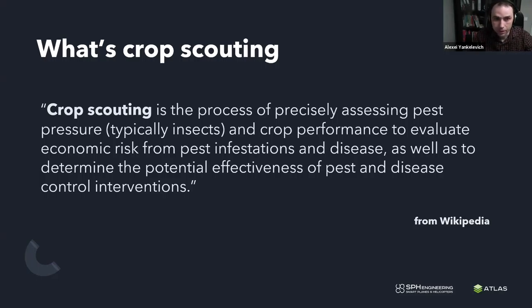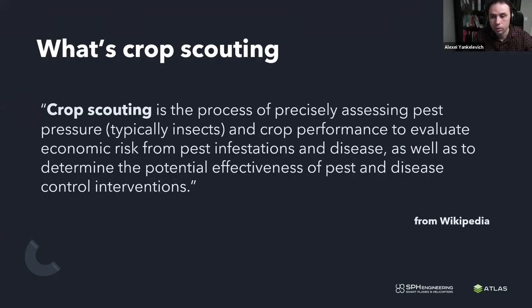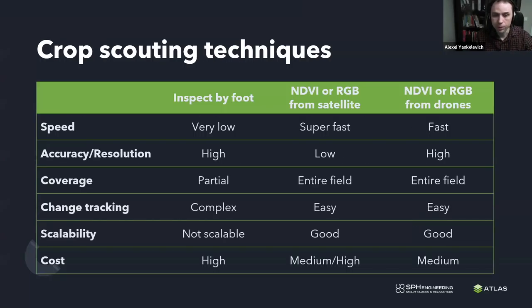If you look into Wikipedia, crop scouting is a process of precisely assessing pest pressure and crop performance to evaluate economic risk from pest infestations and disease. It's a pretty complicated thing, but in reality this activity is about regularly monitoring fields, plants, and soil. In this spreadsheet I tried to list the most common ways to make crop scouting.